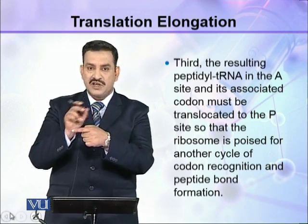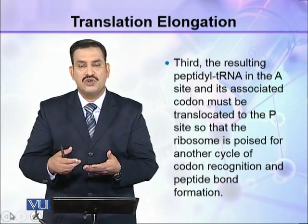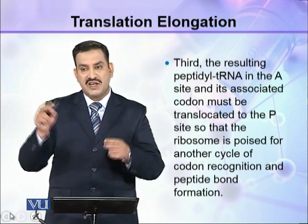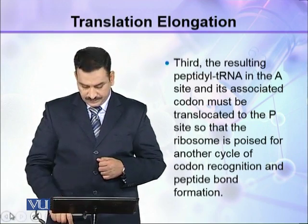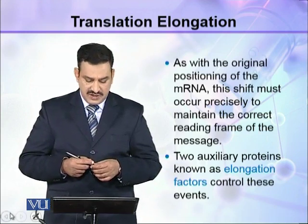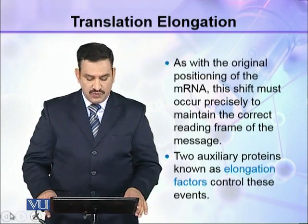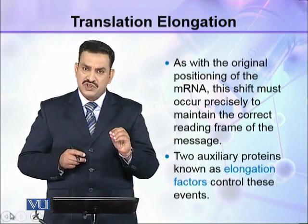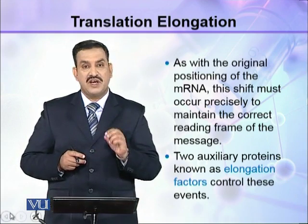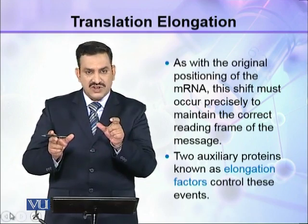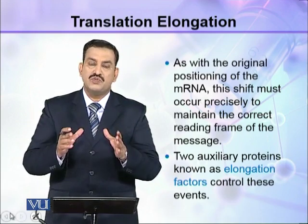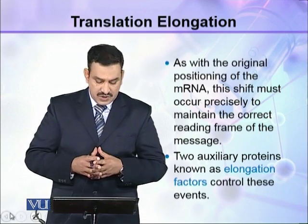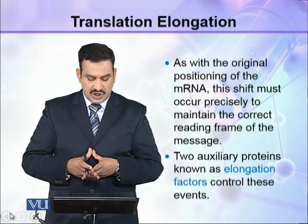The A-site should be free of the mRNA so that the next amino acid can recognize the mRNA codon and come and attach to the A-site. As with the original positioning of the mRNA, this shift must occur precisely to maintain the correct reading frame of the message. The translocation must be equally accurate — if even one nucleotide is over- or under-translocated, the reading frame of the rest of the mRNA will change.